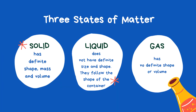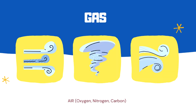The third state of matter is gas. A gas has no definite shape or volume. A gas will fill any container, but if the container is not sealed, the gas will escape. An example of gas is air, which is a mixture of gases containing many elements such as oxygen, nitrogen, and carbon.